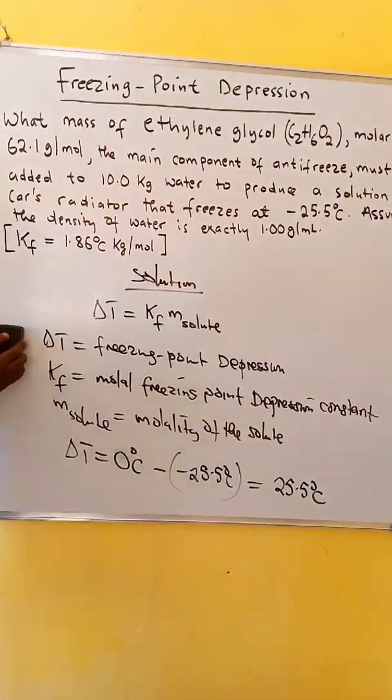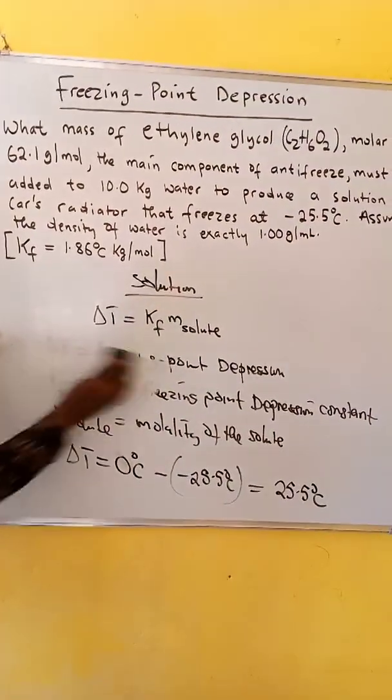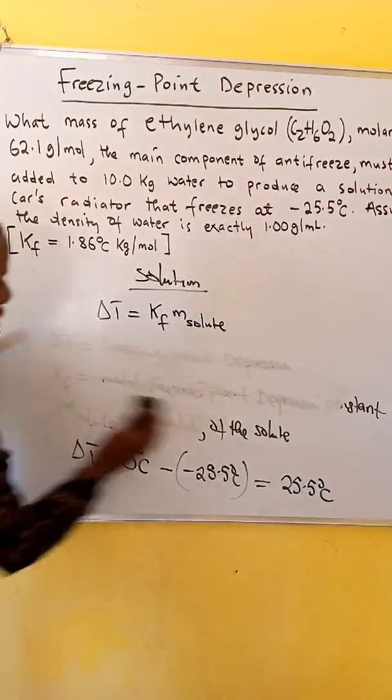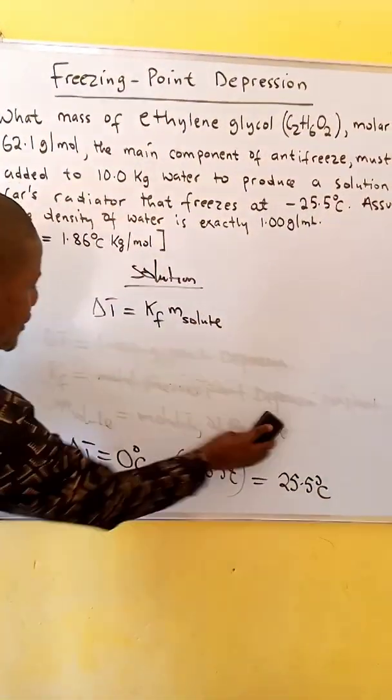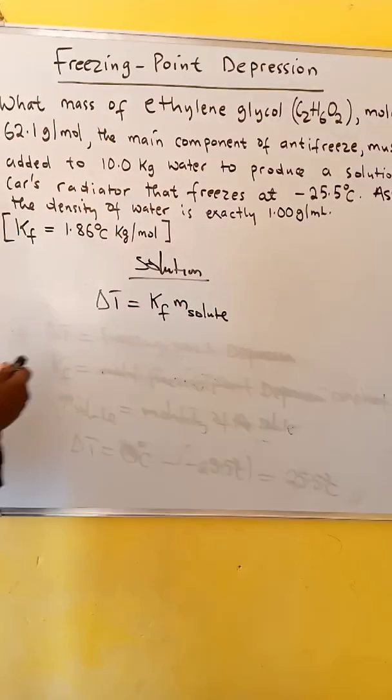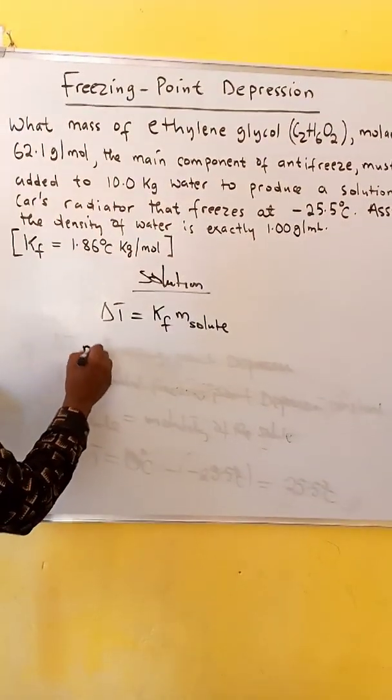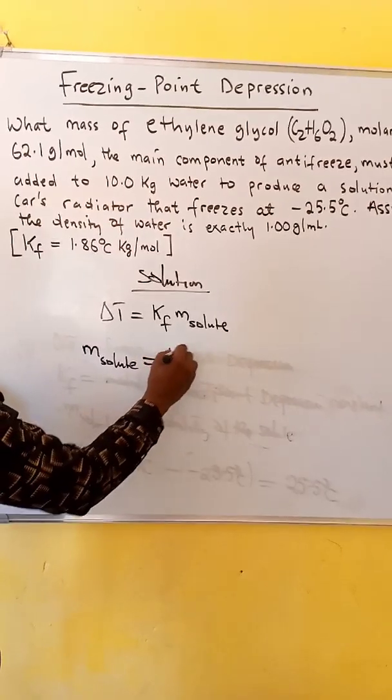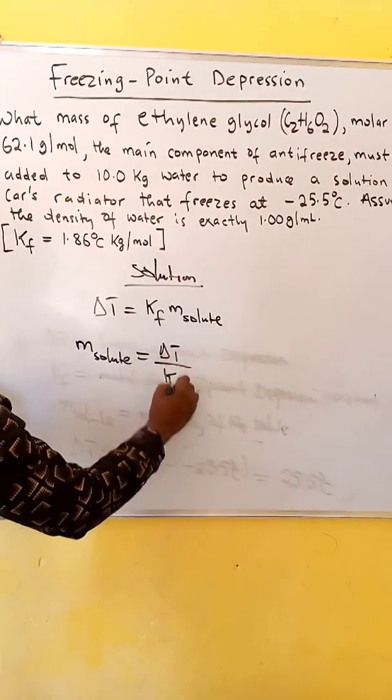Then now we use the delta T to calculate the molality of the solute. We now make M solute the subject of the formula. M solute is equal to delta T over Kf.